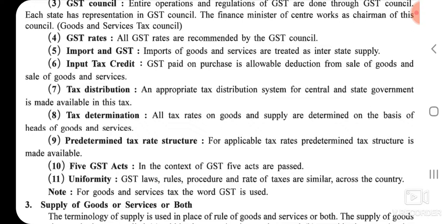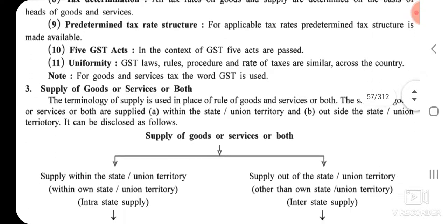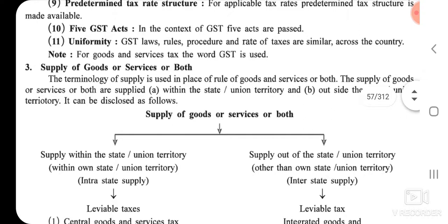Ninth: Predetermined Tax Rate Structure — for applicable tax rates, a predetermined tax structure is made available. Tenth: Five GST Acts — in the context of GST, five acts are passed. Eleventh: Uniformity — GST laws, rules, procedure, and rate of taxes are similar across the country. This means all over India, there is one tax only, called Goods and Service Tax.